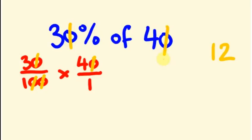In a similar way I am cancelling this zero and this zero — all the zeros have been cancelled. So I am simply cancelling this zero and this zero. What remains is 3 into 4, that is 12.